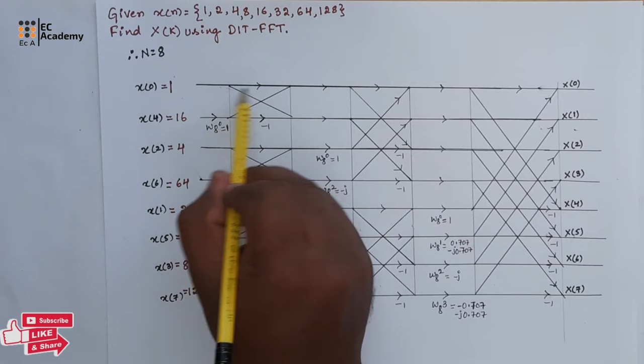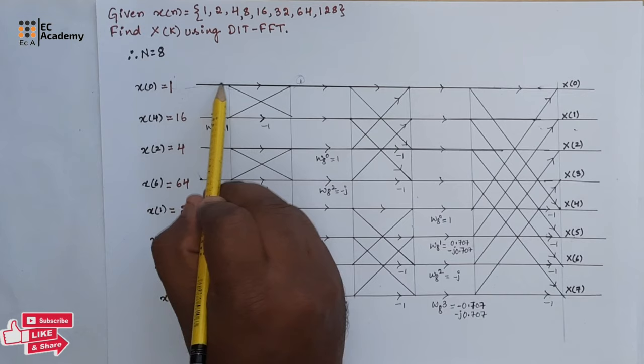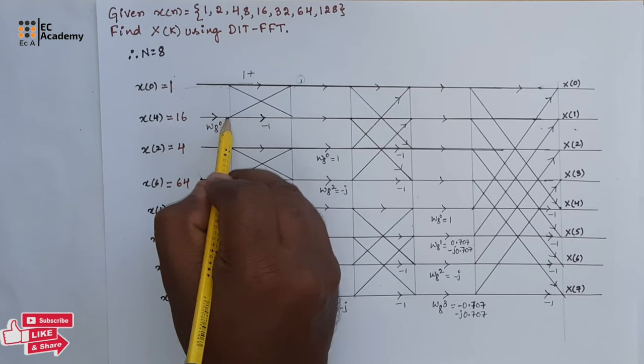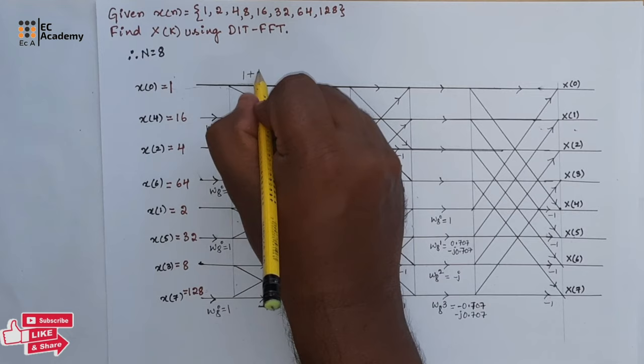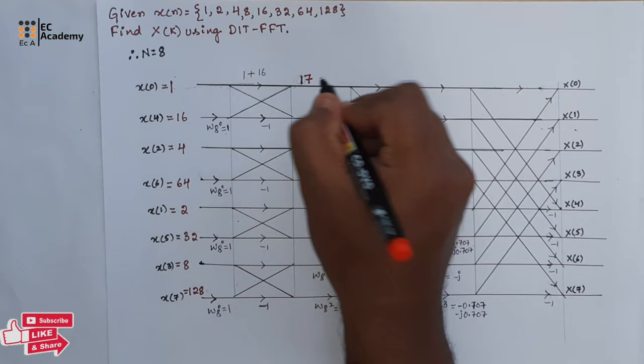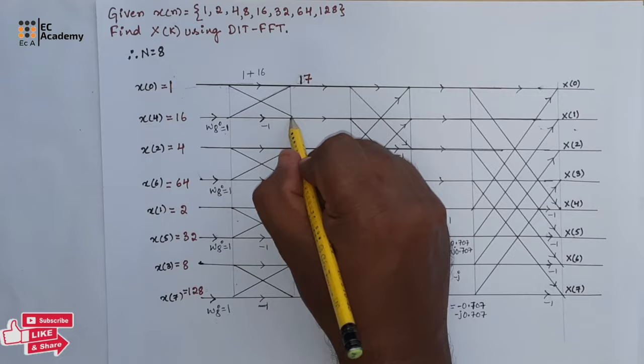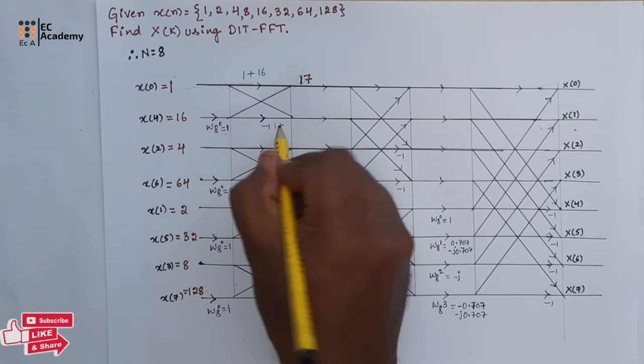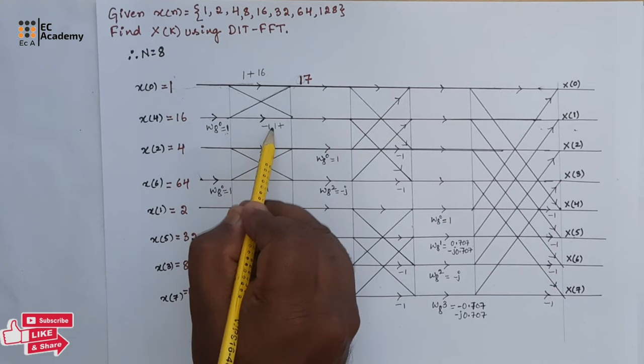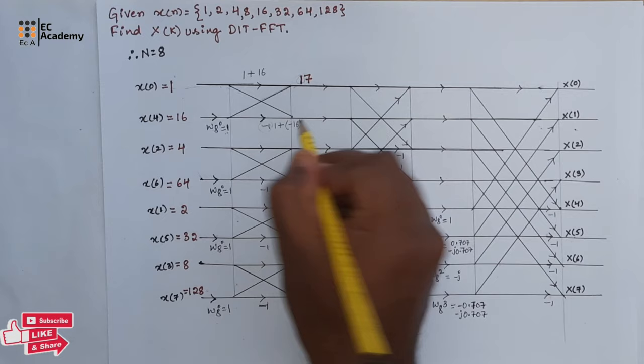In the first stage we find the butterfly outputs. The output at the first upper node is 1 plus 16 times 1, which equals 17. For the lower node, it is 1 plus 16 times minus 1, giving 1 minus 16, which equals minus 15.